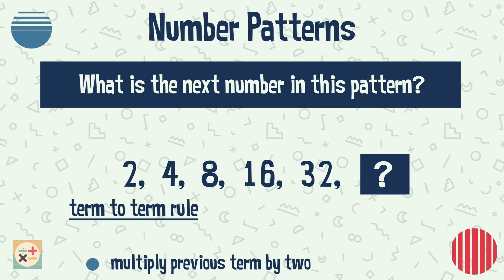This suggests that this is the correct relationship for this pattern. We can now check if this works for the rest of the numbers. Therefore, the rule for this number pattern is to double the previous term in the sequence, so the next term is obtained by multiplying 32 by 2, giving us 64.